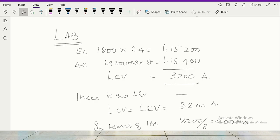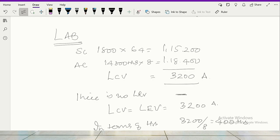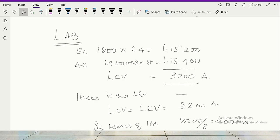1,800 into 64, 1,15,200. Actual cost is 14,800 hours. So labor cost variance is 3,200 hours adverse. Now there is no rate variance. Therefore, labor cost variance is equal to labor efficiency variance. That is equal to 3,200 adverse.